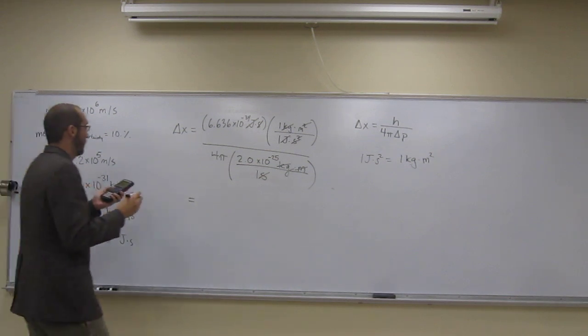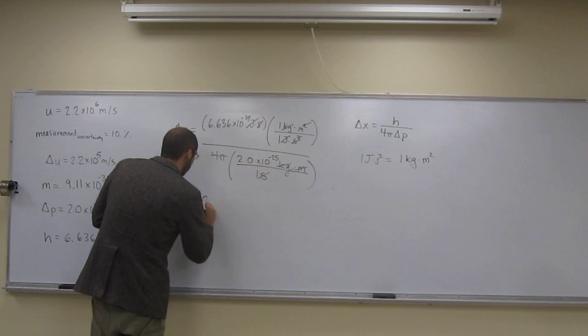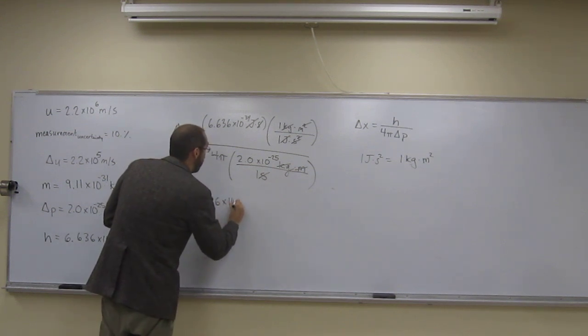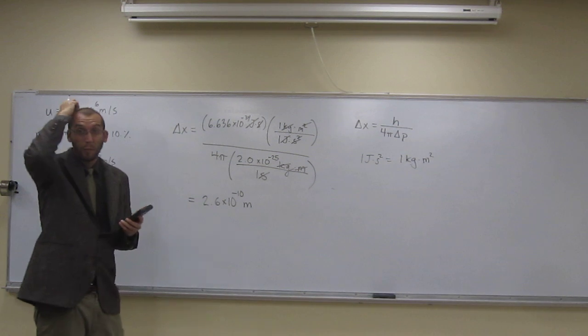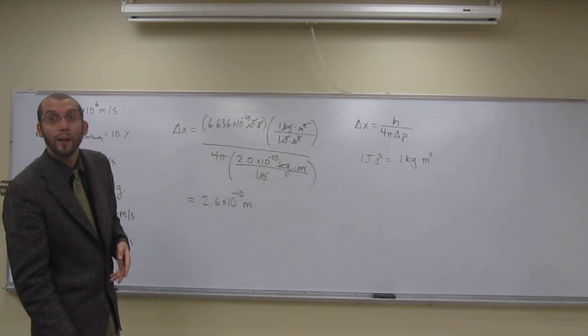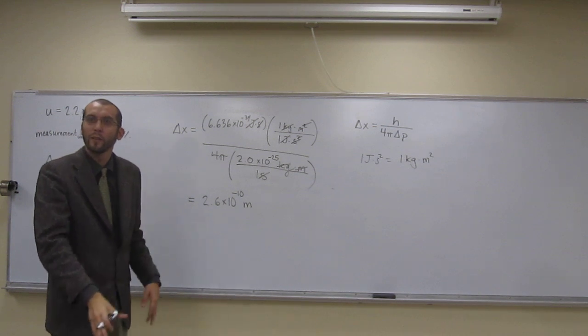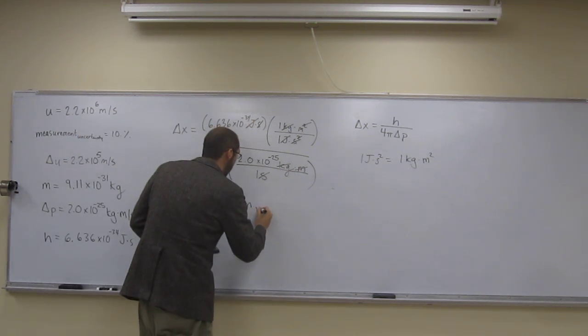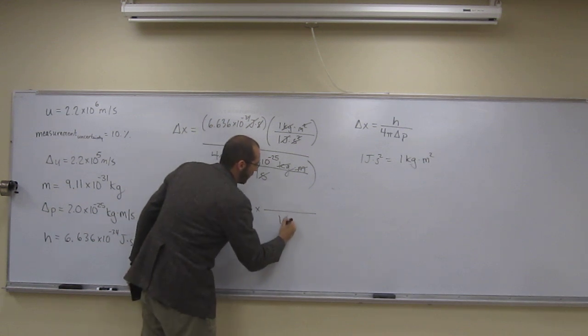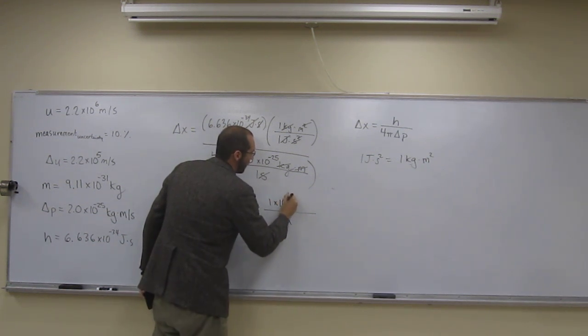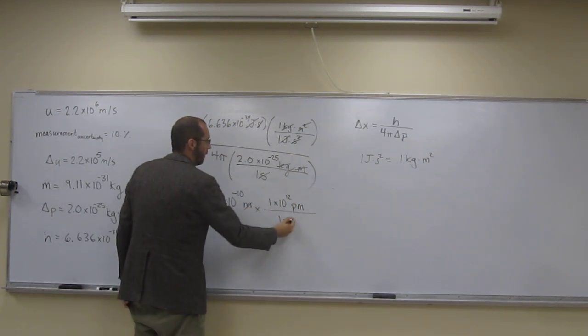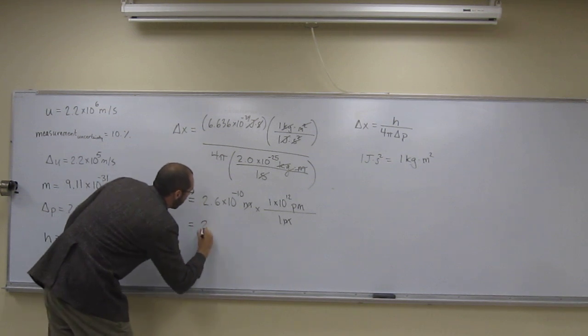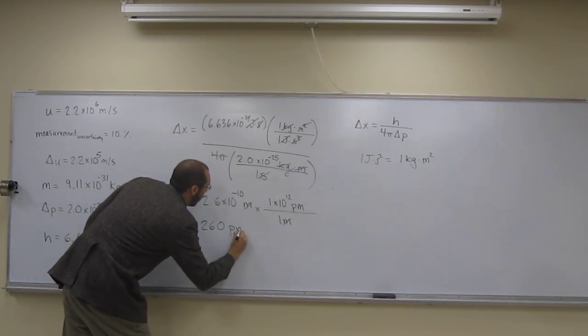So, and what I get is 2.6 because it's the two sig figs. Times 10 to the negative 10th meters. But let's put this in picometers. So, it'll be units that are a number that kind of looks nice. So, remember, for every one meter, there's 1 times 10 to the 12th picometers. So, meter cancels with meter. So, what do we get? 260 picometers.